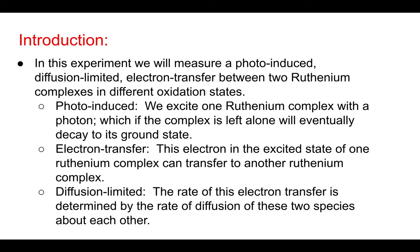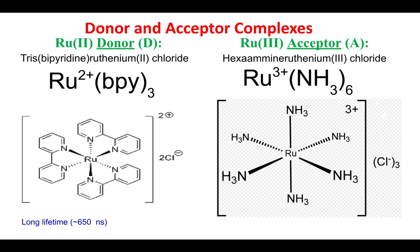Let's say these two species are diffusing about in solution among each other. If the donor and the acceptor come into some proximity, we are going to assume that the excited state electron will hop instantaneously from the donor to the acceptor. So what's limiting the rate of this reaction is the rate of diffusion of these two species about each other. We call this a diffusion-limited electron transfer reaction. Our two species are: the donor, ruthenium-2+ trisbipy, and the acceptor, ruthenium-3+ hexamine.